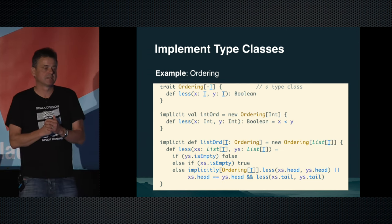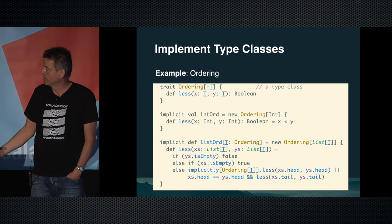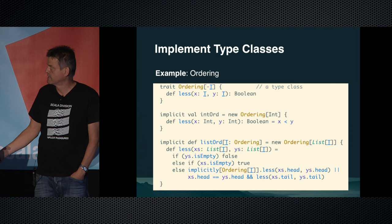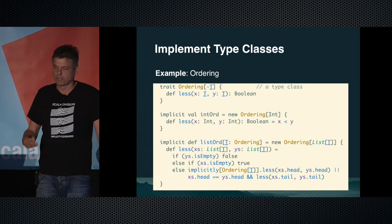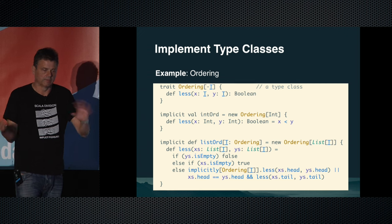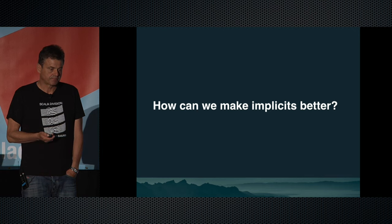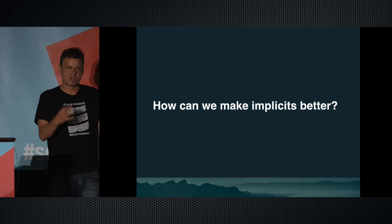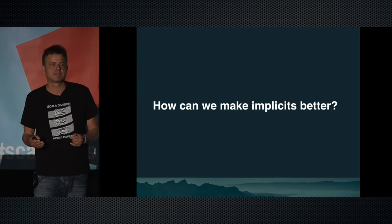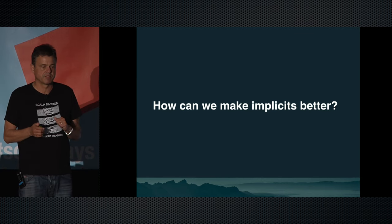Implicits can also implement type classes. Here's an 'Ordering' type class with a 'less than' method, an instance saying integers are ordered, and a conditional instance saying lists are ordered if the element type has an ordering. It's a surprising number of different use cases — from capabilities to context, dependency injection, type classes, and theorem proving — all done with one concept: implicit parameters.